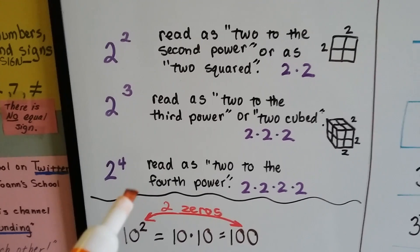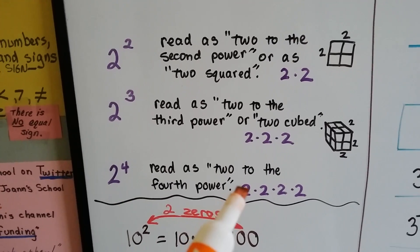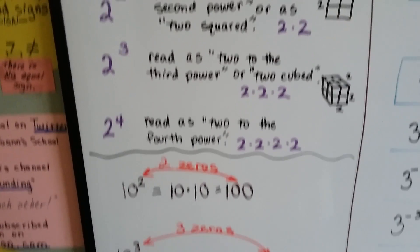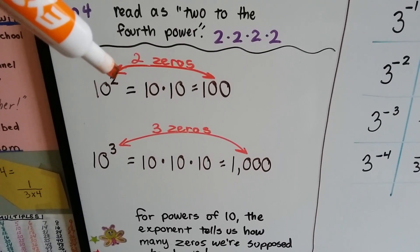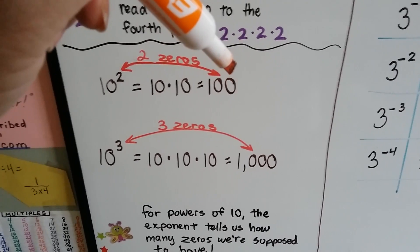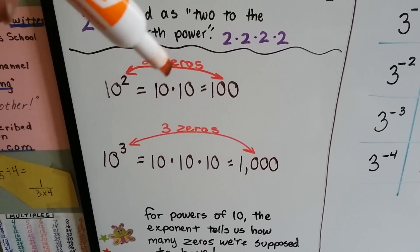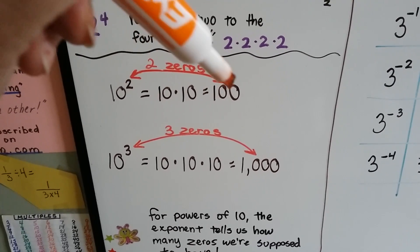2 with a little 4 exponent is read as 2 to the fourth power, and it means 2 times 2 times 2 times 2. We do it 4 times. For powers of 10, whatever the exponent is tells us how many zeros are supposed to be in the answer. 10 to the second power means 10 times 10. That would be 100. There's 2 zeros.